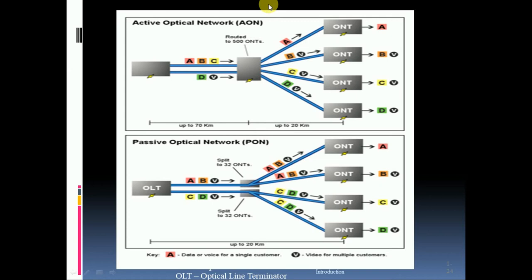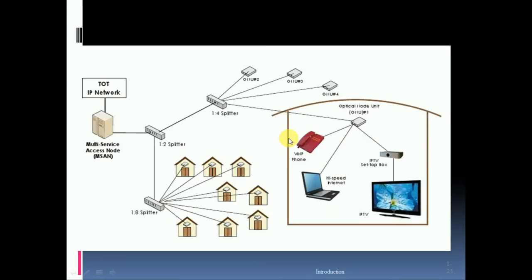This is an overview of Active Optical Network and Passive Optical Network. There are four splitters and a multi-service access node. From one splitter, the connection is distributed to different homes. From another splitter, the connection goes to an optical unit, which then provides connectivity to TV, computer, and telephone.